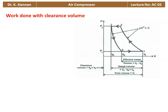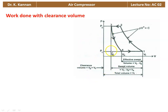The work done with the clearance volume — this is the PV diagram for a single stage reciprocating compressor with the clearance volume. V1 is the total volume when the piston is at the bottom dead center, and V3 is the volume when the piston is at the top dead center. Between the top dead center and the cylinder head, we have the clearance volume, denoted by VC. The volume between the top dead center and the bottom dead center is known as the swept volume or stroke volume — that is V1 minus V3.